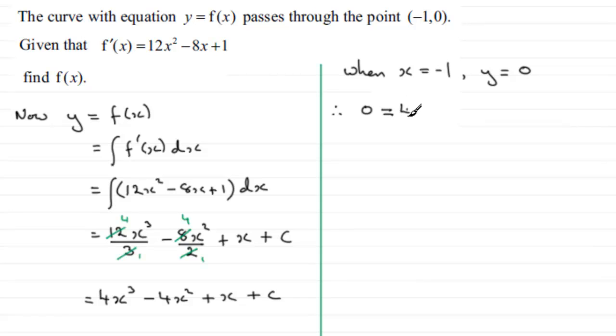And we just substitute -1 into here, so we've got 4(-1)³ - 4(-1)² + (-1) + c.